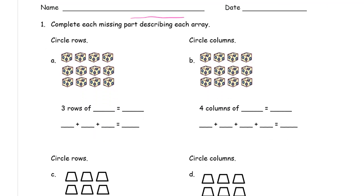Complete each missing part describing each array. Now we're just talking about rows and columns and circling rows, circling columns.